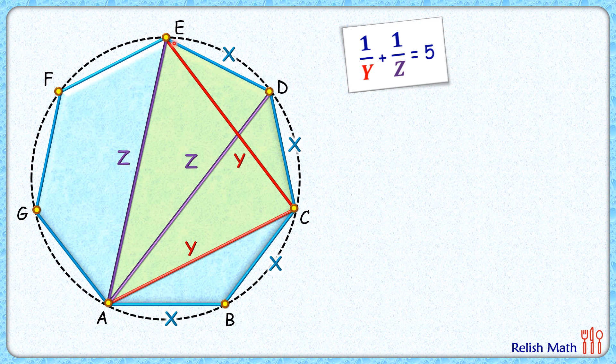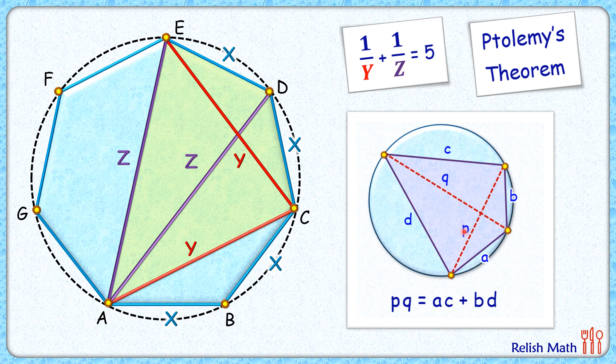In this we can apply Ptolemy's theorem. Ptolemy's theorem says that in a cyclic quadrilateral, the product of diagonal lengths (p × q) equals the sum of the product of opposite sides (a × c + b × d).